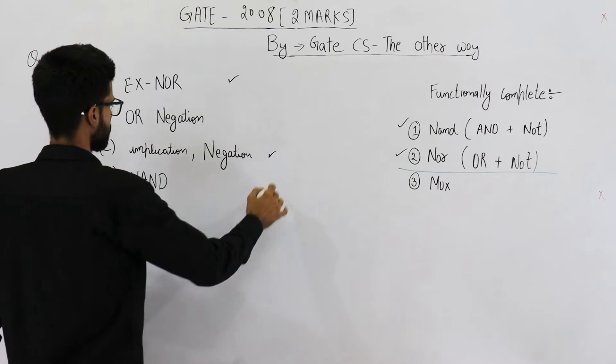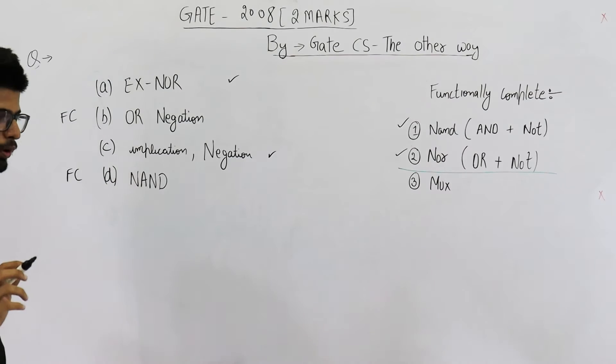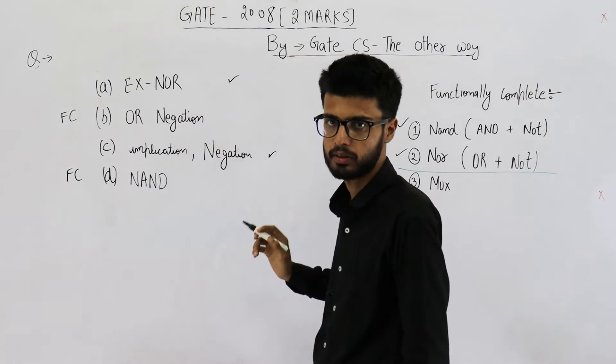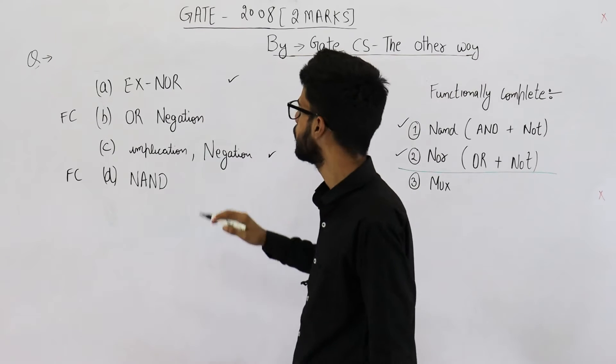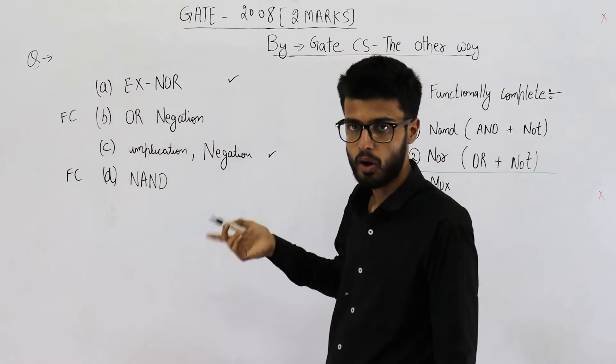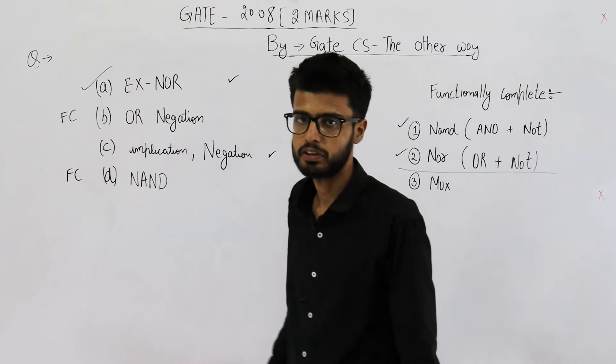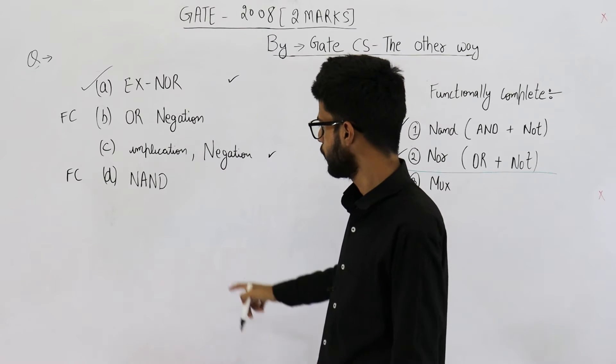Now the confusion is between option A and option C. I've told you only two basic gates are functionally complete: NAND and NOR. So XNOR is functionally not complete. This one is the answer. This is not functionally complete, option A.